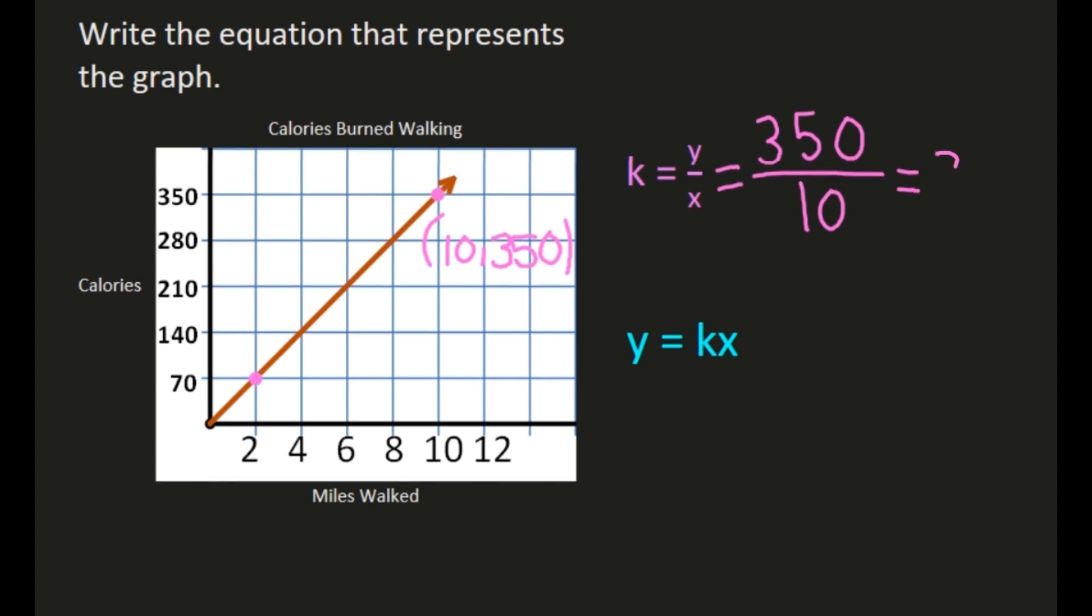Had I used 2, 70, I would have had 70 over 2 or 70 divided by 2, which still would have been 35. But I thought dividing by 10 would be easier, which is why I chose the other point. It doesn't matter which point you choose for your calculation of your constant of proportionality. I do just recommend that you choose one that's on a grid line so you know the exact values that you're using.